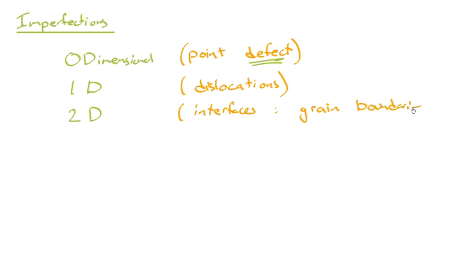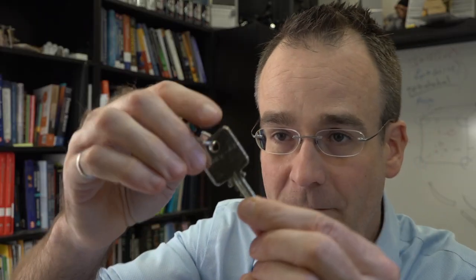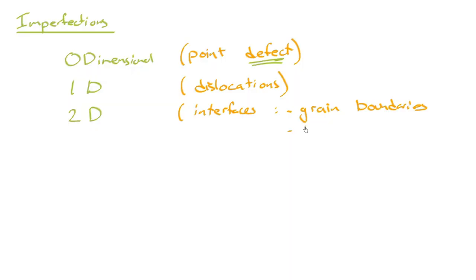Two-dimensional imperfections could also be the interface of the material with air. For example, take my keys here — this is a metal, there's copper and zinc mixed together in a particular lattice in a specific crystal structure, but then all of a sudden there's a free surface, there's air, and there's a disruption in the regular repeating arrangement. So that is a free surface. We'll look at those a bit as well — they're quite important.